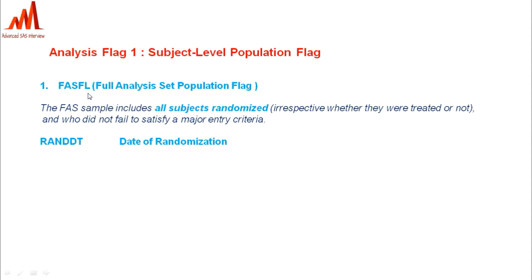The first flag is FASFL — the Full Analysis Set Population Flag. This includes all subjects who were randomized, irrespective of whether they were treated or not, and who did not fail to satisfy a major inclusion criterion. For a randomized study, anyone assigned a treatment in the randomization schedule gets this flag. Since a subject may have multiple records, this flag must be populated on all records.